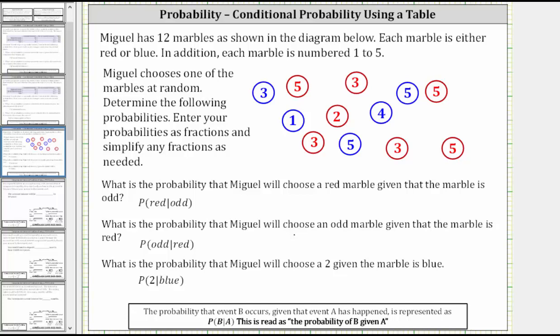Miguel has 12 marbles as shown in the diagram below. Each marble is either red or blue, and each marble is numbered one to five. Miguel chooses one of the marbles at random. Determine the following probabilities — enter your probabilities as fractions and simplify any fractions as needed.